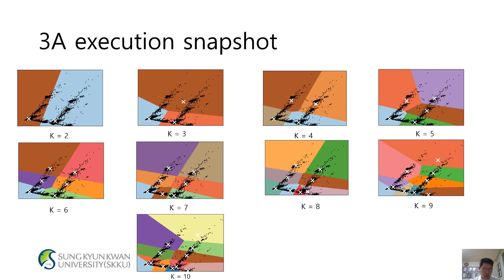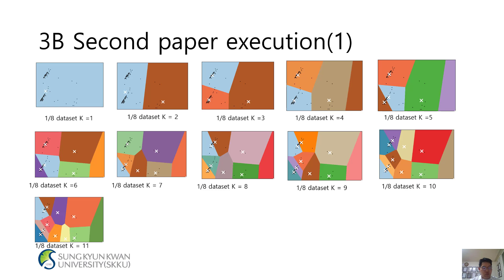3A execution snapshot results: k=2, k=3, k=4, k=5, k=6, k=7, k=8, k=9, and k=10 results are presented.